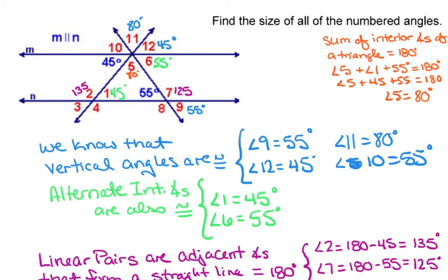And if I look down here at angle 7, it is a vertical angle with angle 8. So angle 8 is going to be 125 degrees.